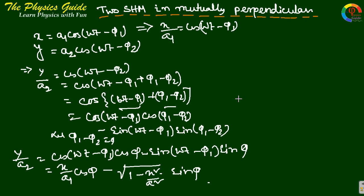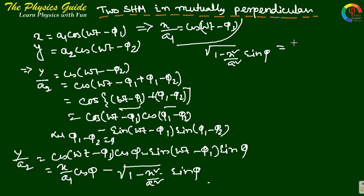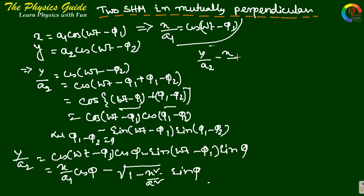Substituting, the equation becomes: y/a2 - (x/a1)·cos φ = -√(1 - x²/a1²)·sin φ. Rearranging: √(1 - x²/a1²)·sin φ = (x/a1)·cos φ - y/a2.